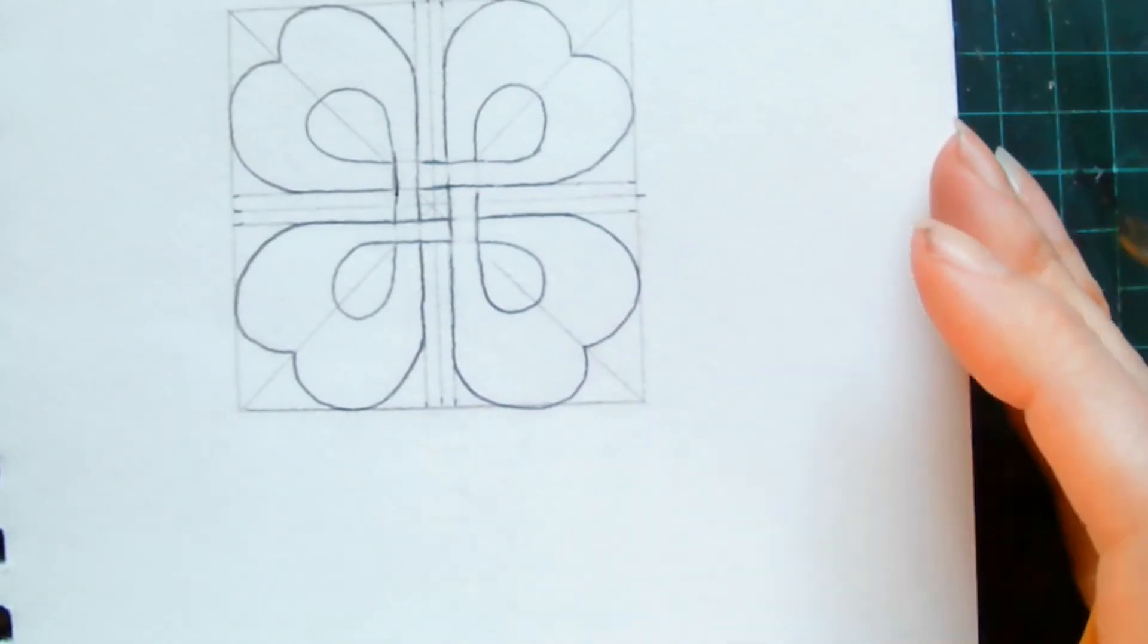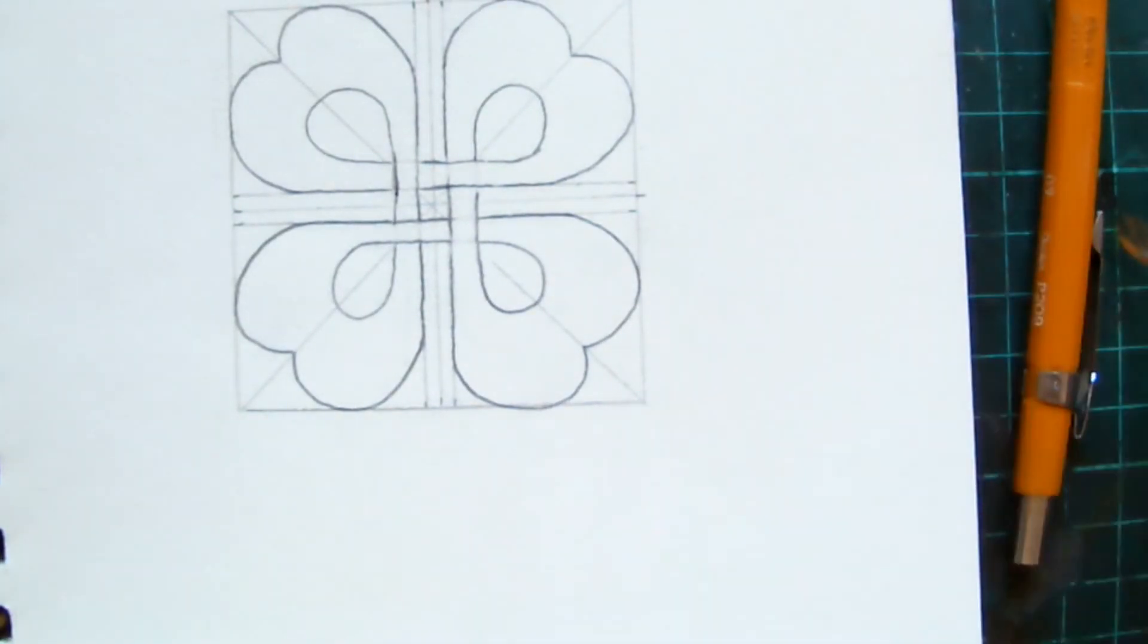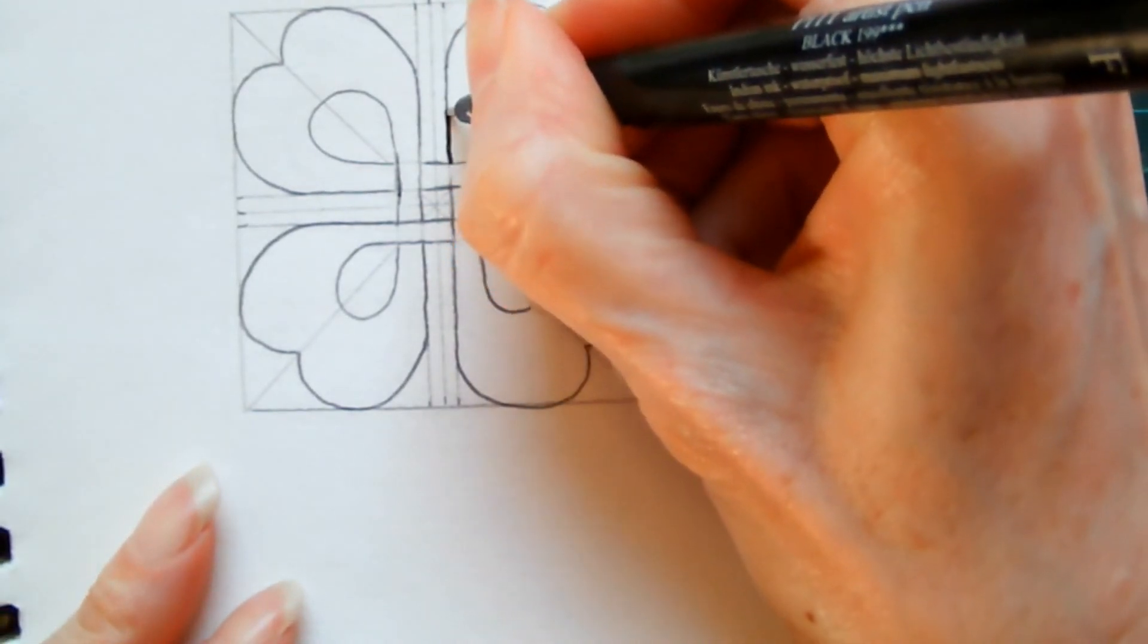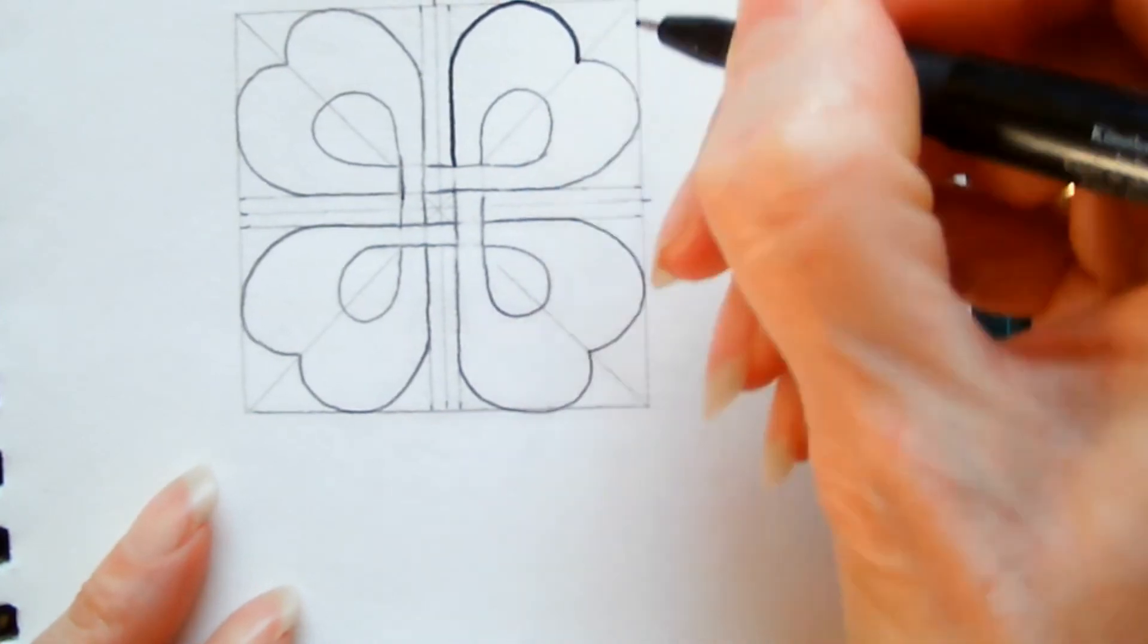And that's it, that's the four-leaf clover done. So all it remains for you to do now is just to outline all the lines that you've drawn in, and then color it in if you want to.